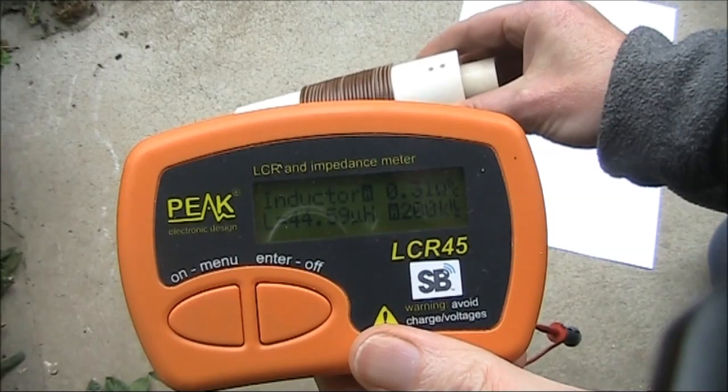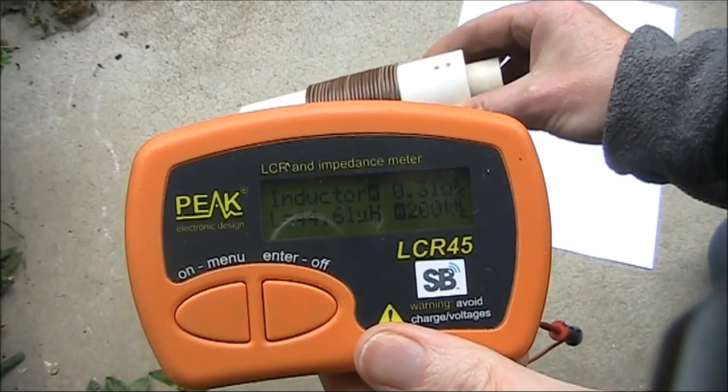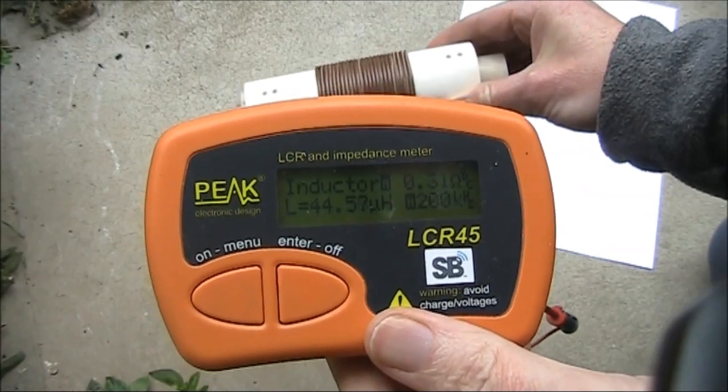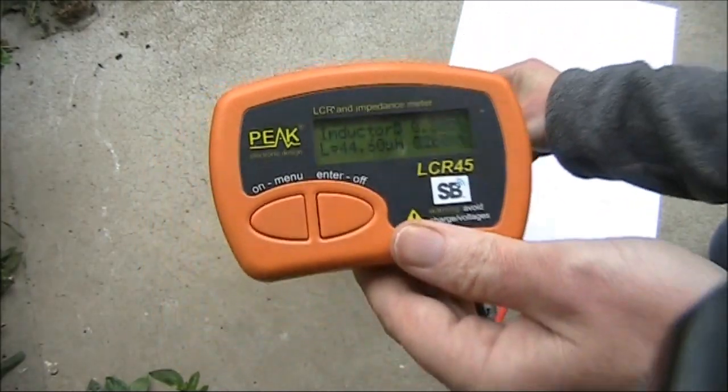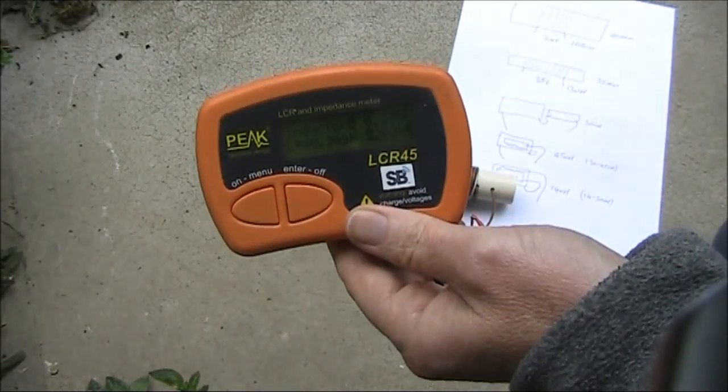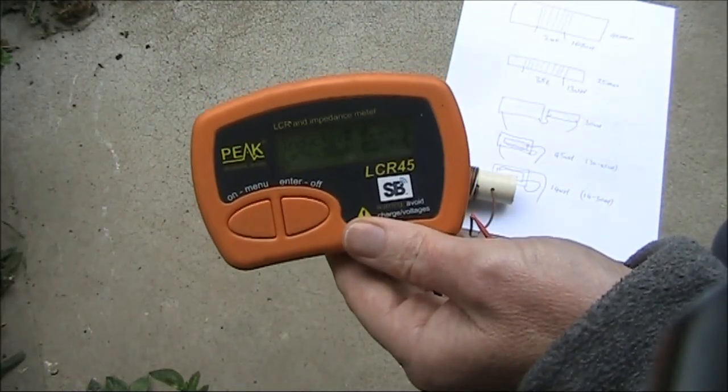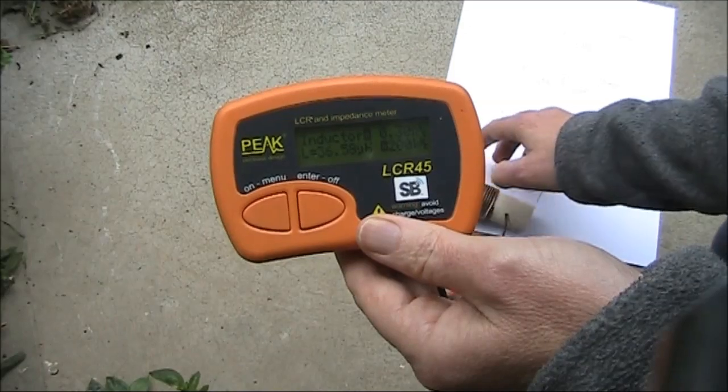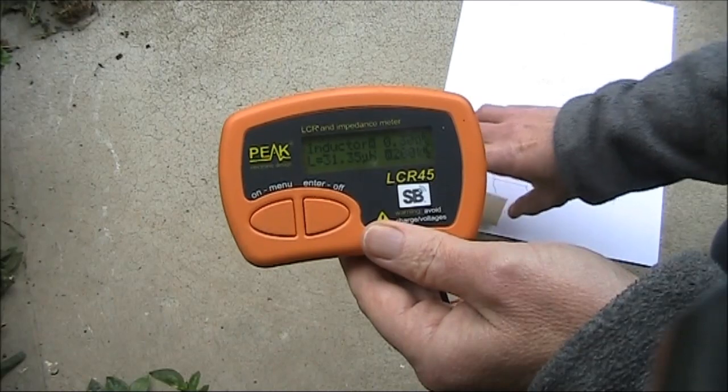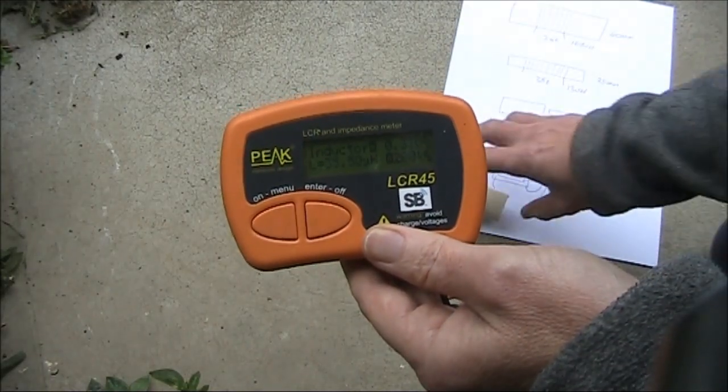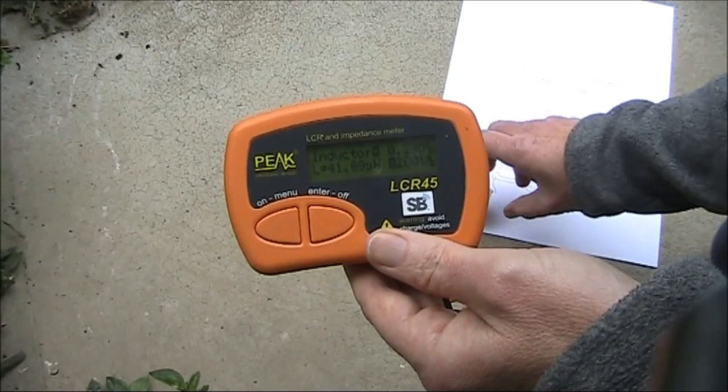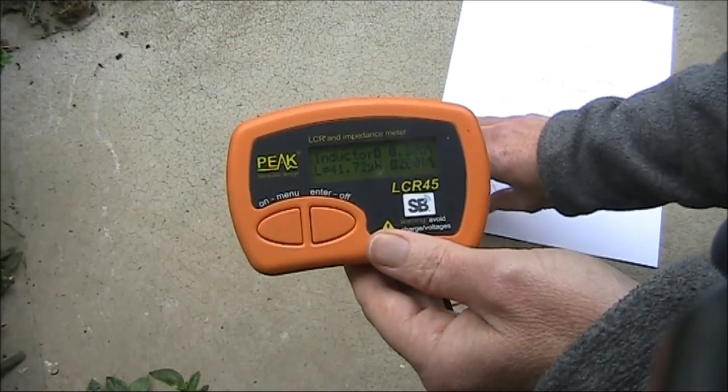Remembering that we had the two in series, with the inner out at being 30 microhenry, if we move the inner a little bit further out, then we'll be able to get an intermediate value. Hence we have an almost continuously variable inductor over the range 30 to 44 microhenry.